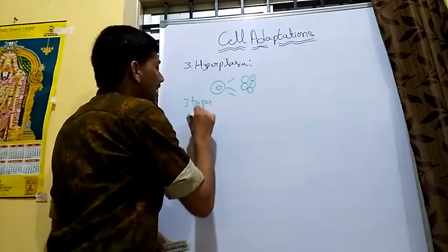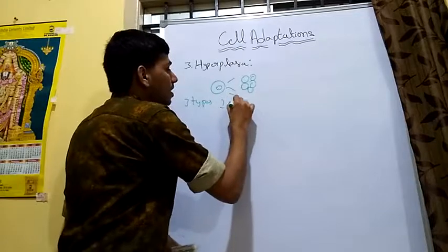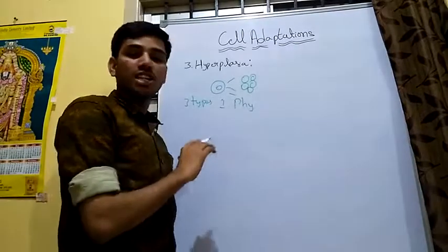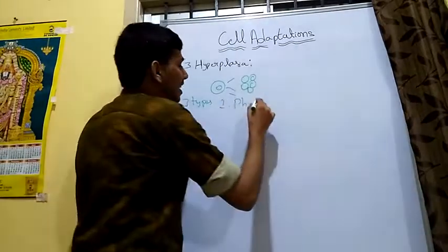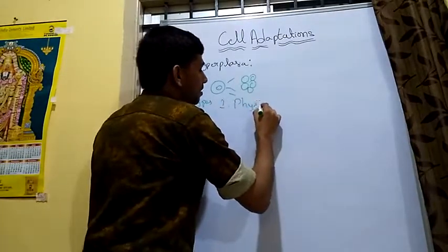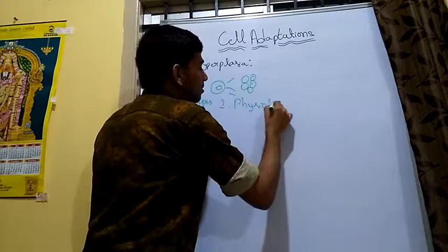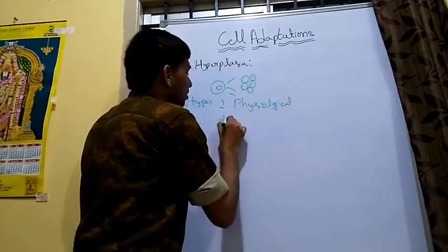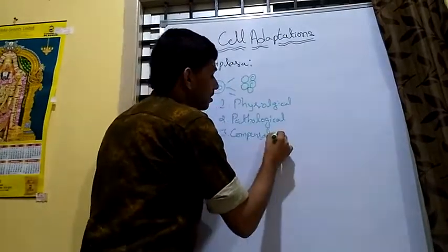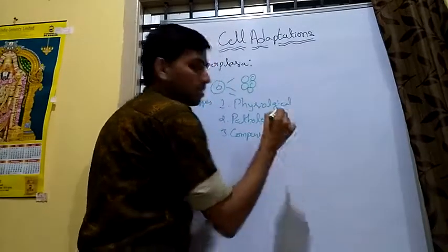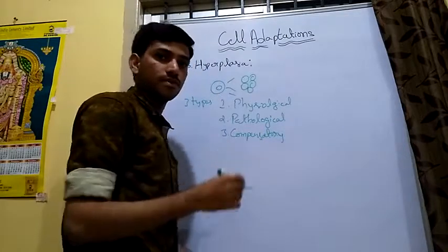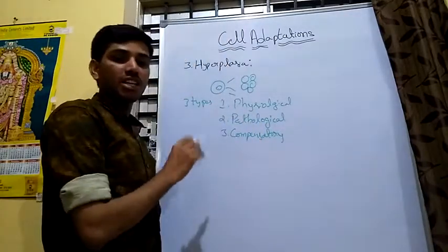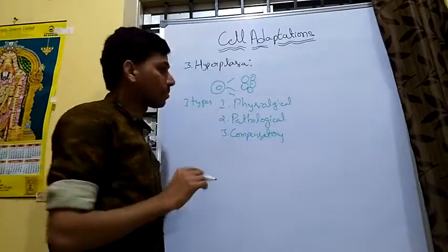The three types of hyperplasia are: first, physiological hyperplasia; second, pathological hyperplasia; and third, compensatory hyperplasia.